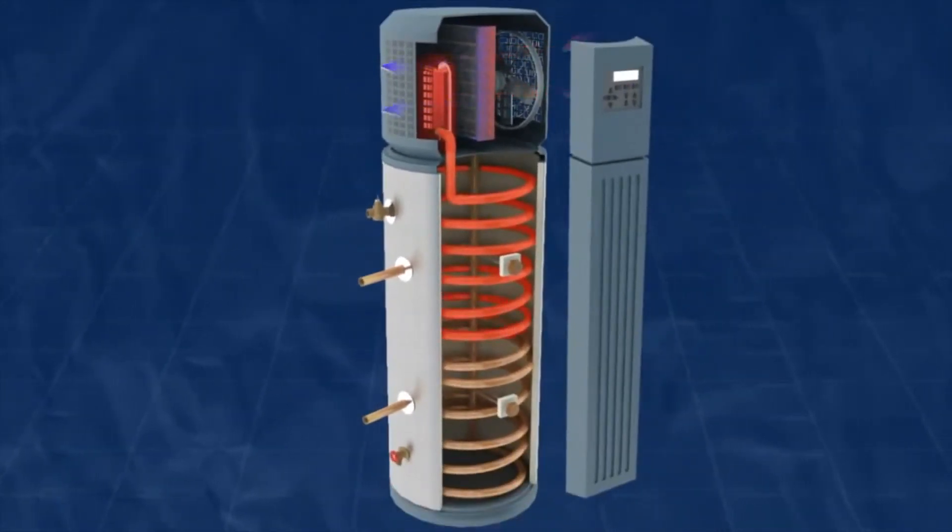This hot vapor refrigerant then flows through a copper coil in the water tank and heats the water. The refrigerant then condenses back to a liquid state and the cycle begins again.